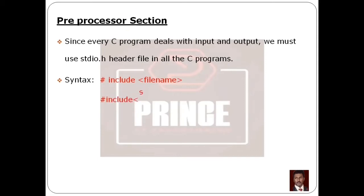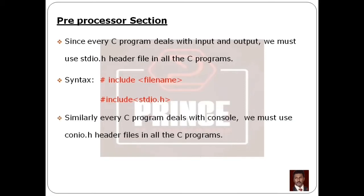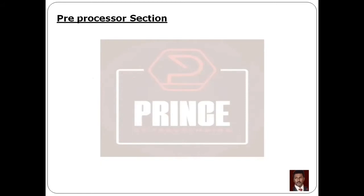For example, if we include the stdio.h header file, we write: hash include, then angle brackets with stdio.h inside. Similarly, in all C programs we can include console-related functions such as clear screen and getch. For those, we use the same syntax: hash include, then angle brackets with conio.h. So we include two header files: stdio.h and conio.h.